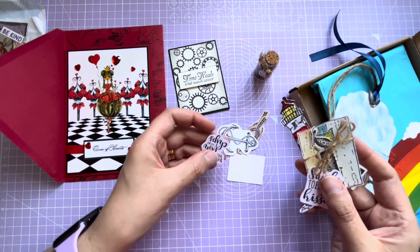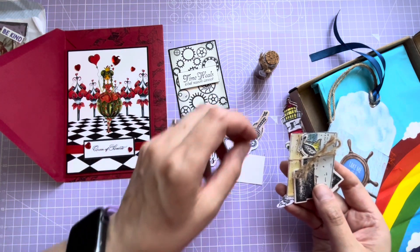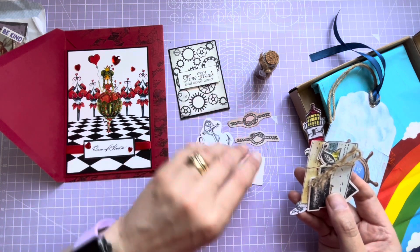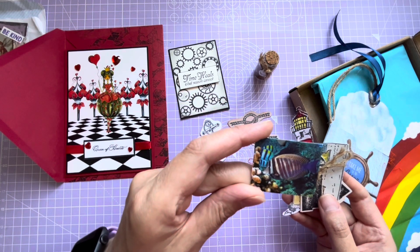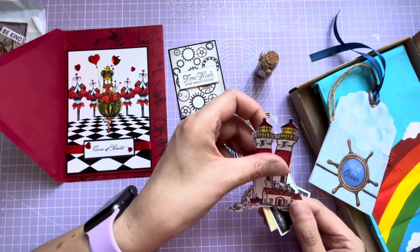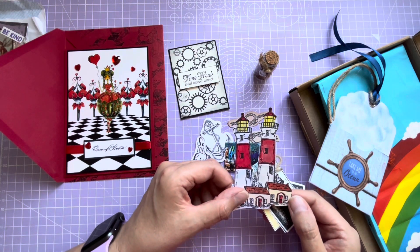So we've got a cutout of the sentiment and this one says 'Sandy toes and salty kisses.' And then we've got an anchor, some rope, and then got a little fish on there. And then I love lighthouses - oh there's two of those and they've been colored in as well. They're beautiful!